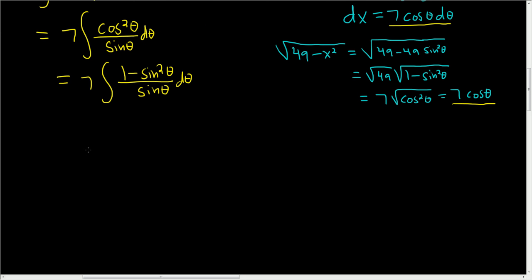We can rewrite this. So we can break it up as follows. It's going to be 1 over sine. Now 1 over sine is cosecant. And then minus sine squared over sine. Sine squared over sine is simply sine. So minus 7 sine theta d theta.